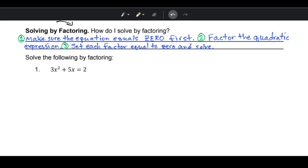So this time, here's our steps for factoring to solve. Step number one, make sure that the equation equals zero first. That has to happen in order to do the remaining parts. Step two, factor the quadratic expression. So you're going to have one side of your equal sign that has all of your terms on it. You're going to factor that. And then step three, set each factor equal to zero and then solve.